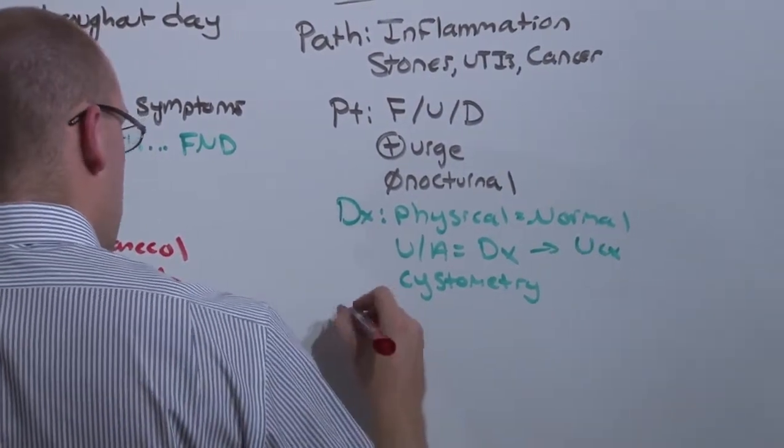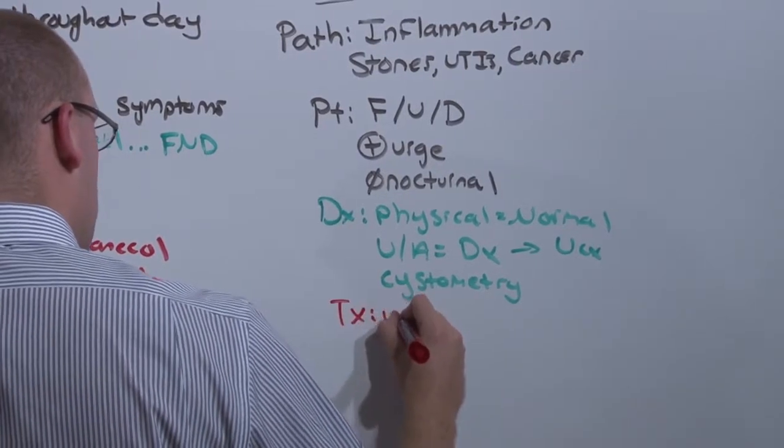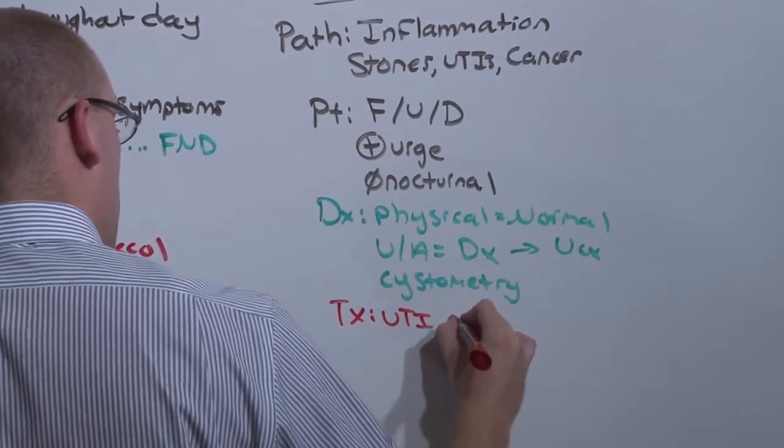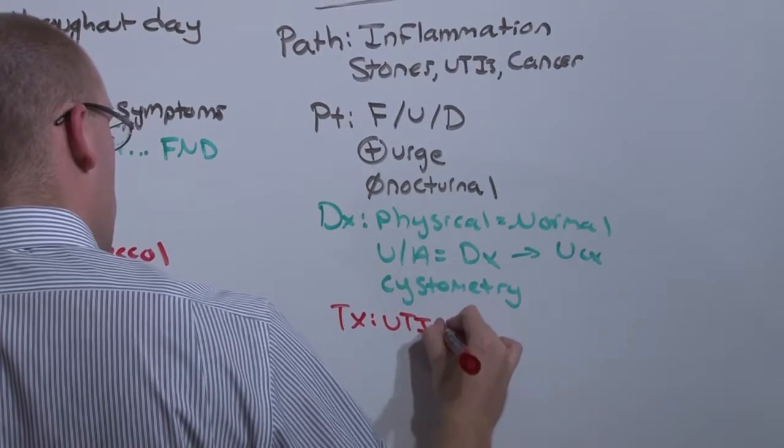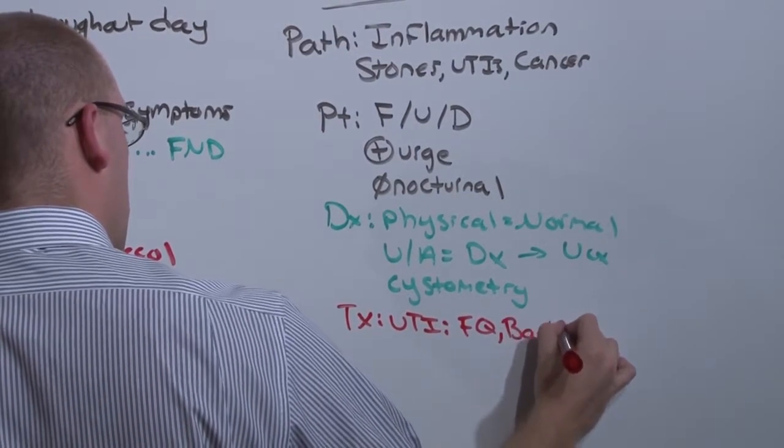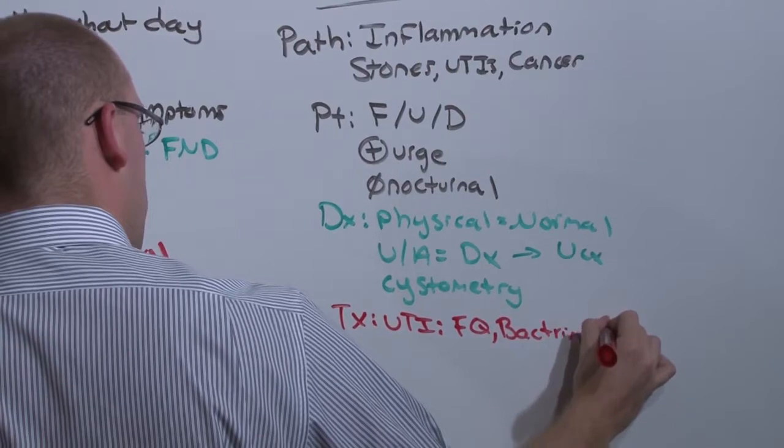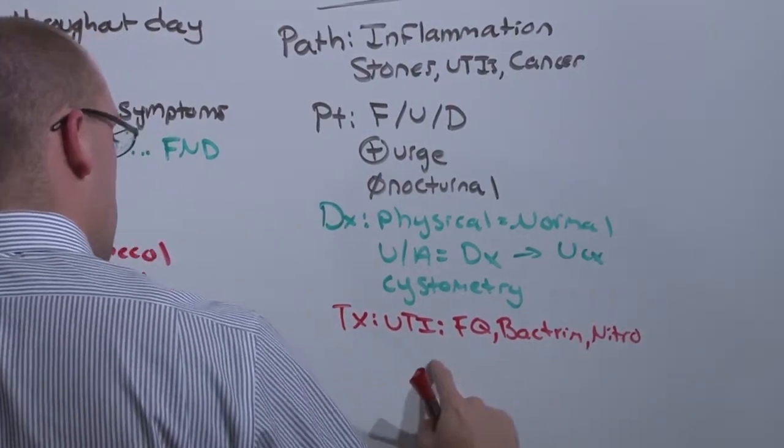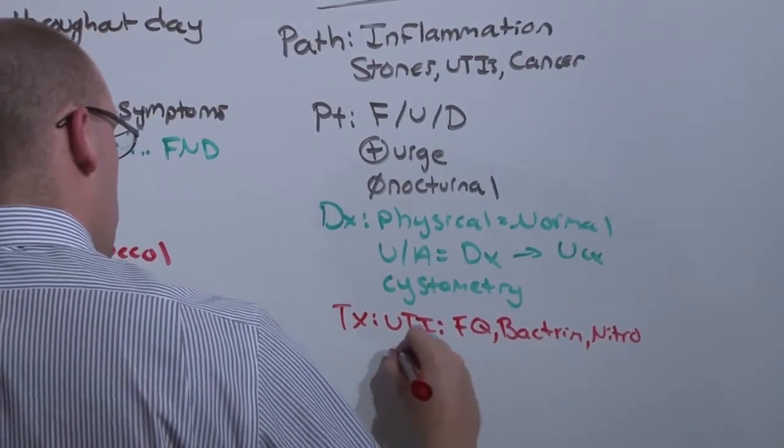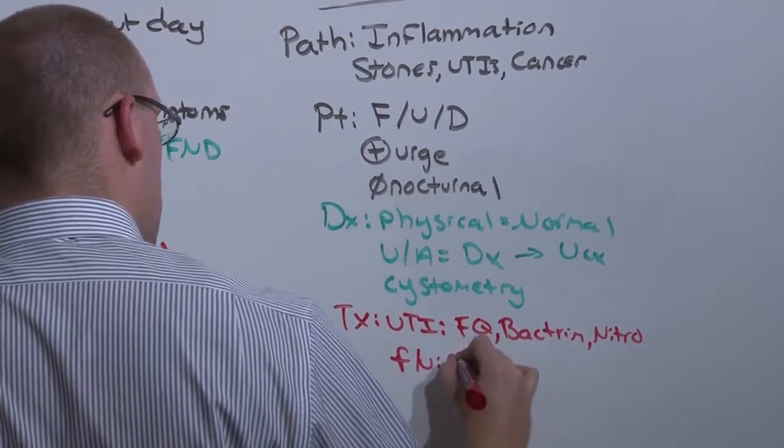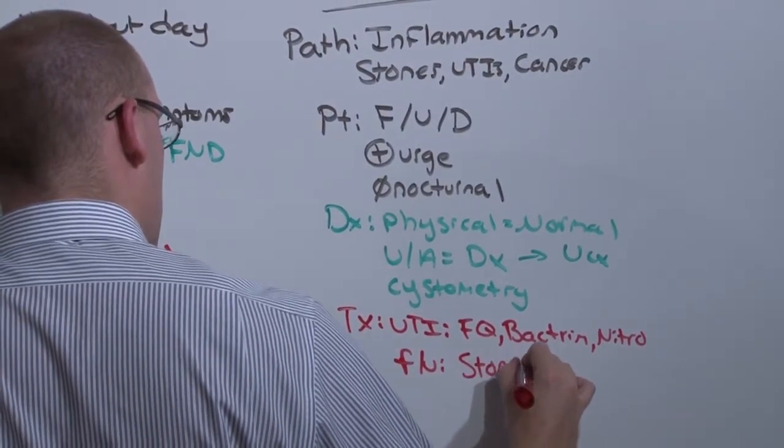You're going to treat a urinary tract infection either with a fluoroquinolone, like Cipro, Bactrim, or Nitrofurantoin. See the medicine lectures on UTIs for more details. And of course, there's going to be some follow-up needed for the stones and the cancer. Again, that's covered in medicine videos.